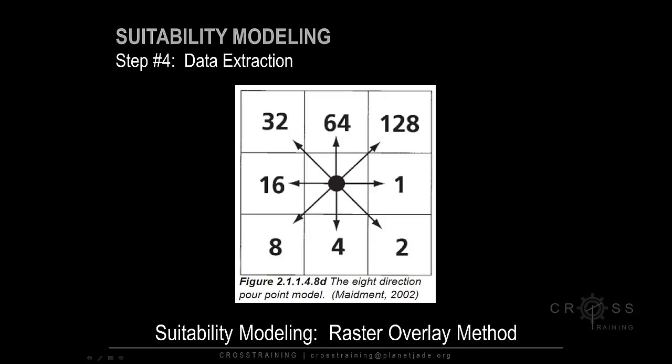The next thing we need to calculate is flow direction, since we just filled in all the sinks. Water in a given cell can flow to one or more of its eight adjacent cells, as we see here in figure 2.1.1.48D. This concept is called the eight direction pour point model.